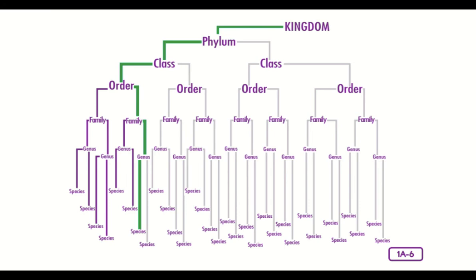Vertebrates belong to the animal kingdom and are in the phylum chordata. This phylum is divided into even more groups called classes. A class is divided into smaller groups called orders. An order is divided into smaller groups called families. A family is divided into smaller groups, each called genus. And a genus is divided into even smaller groups called species. There are many, many species within each group.